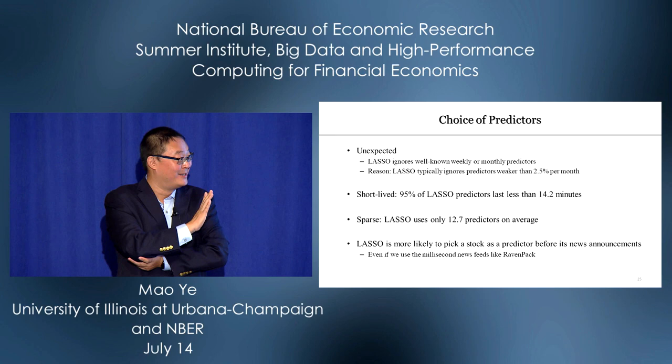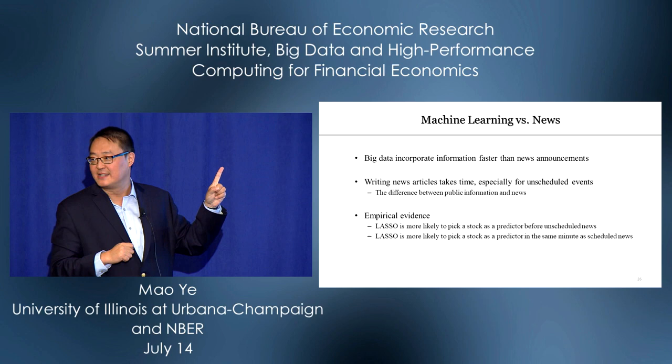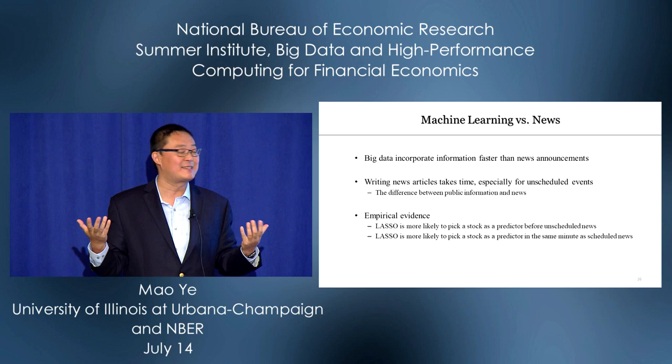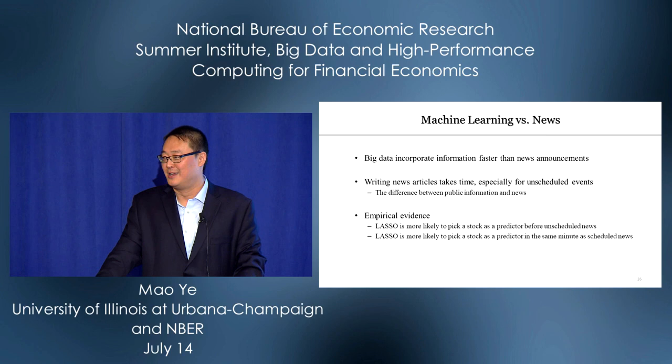Is that insider trading? We finally figure out what happens: big data incorporates information faster than news announcements. We sometimes use news as an example of public information, but who writes the news? Sometimes a machine can write it, but a news reporter still needs to write some stories — that takes time. Here's an example: we invited someone to a seminar, but they arrived late because their train hit a truck.